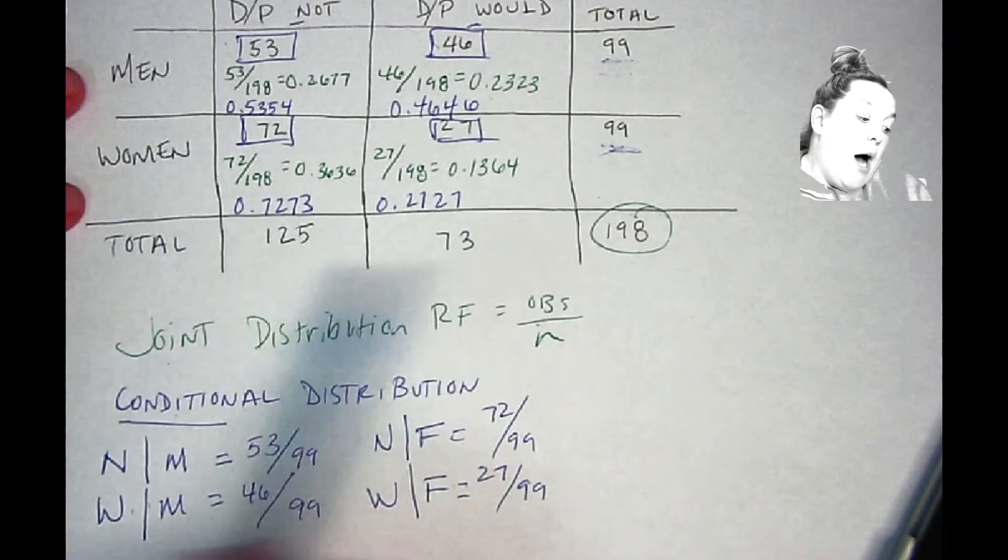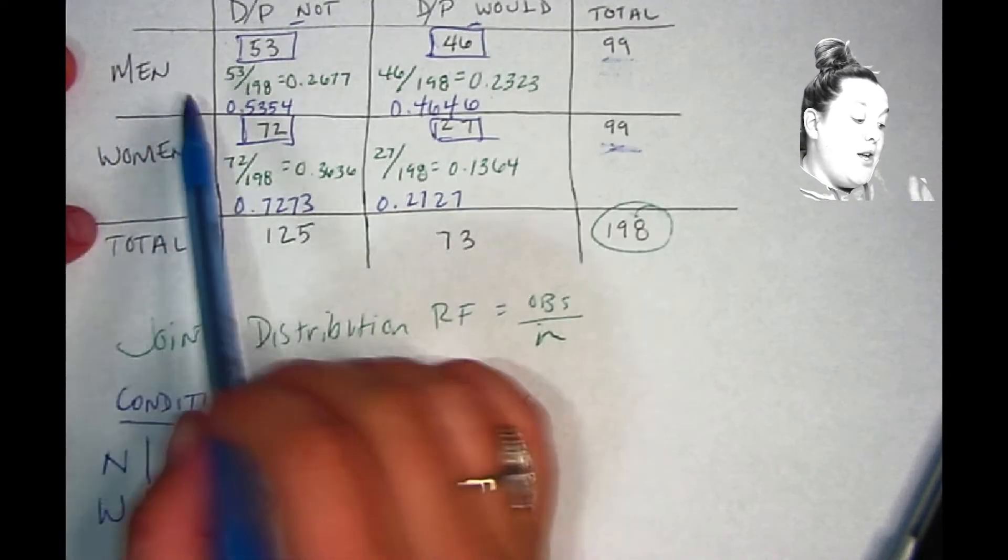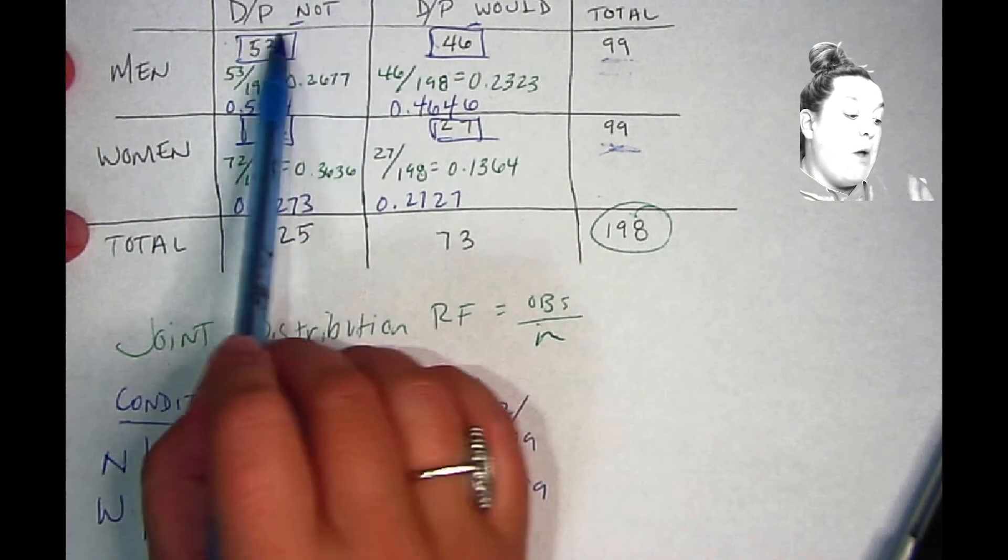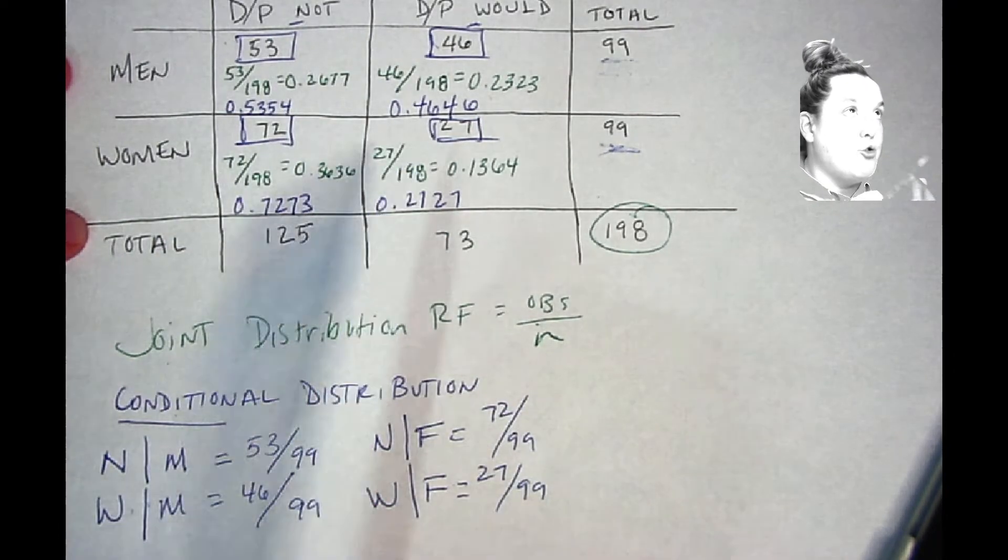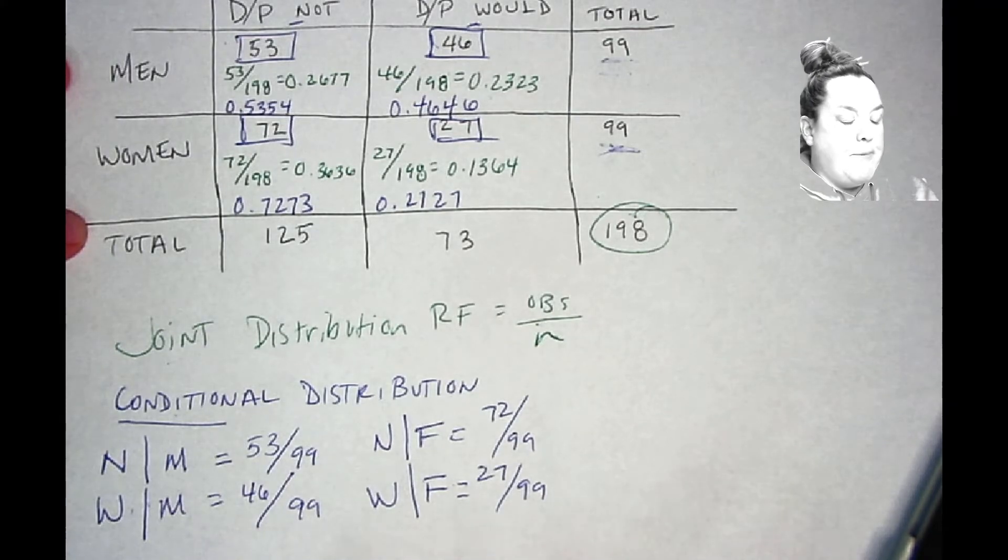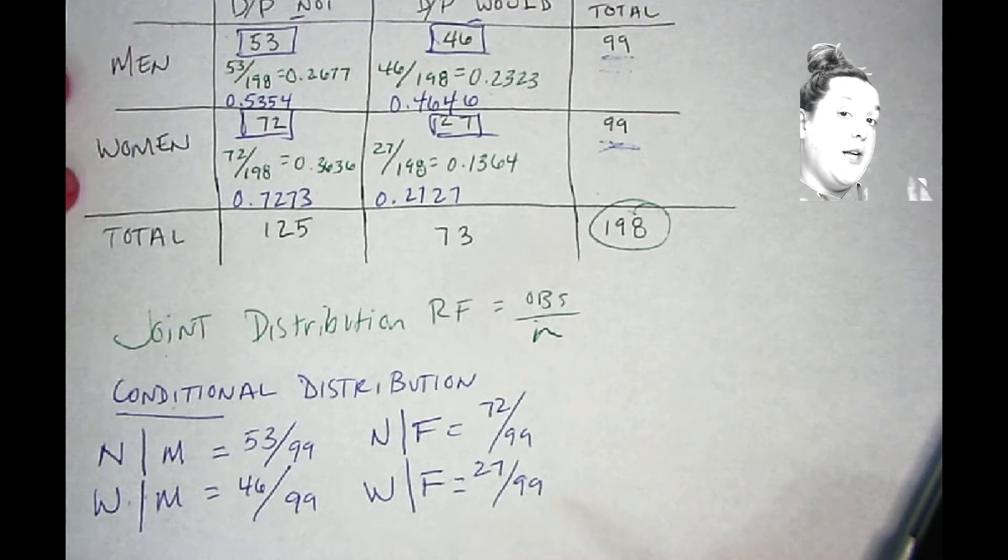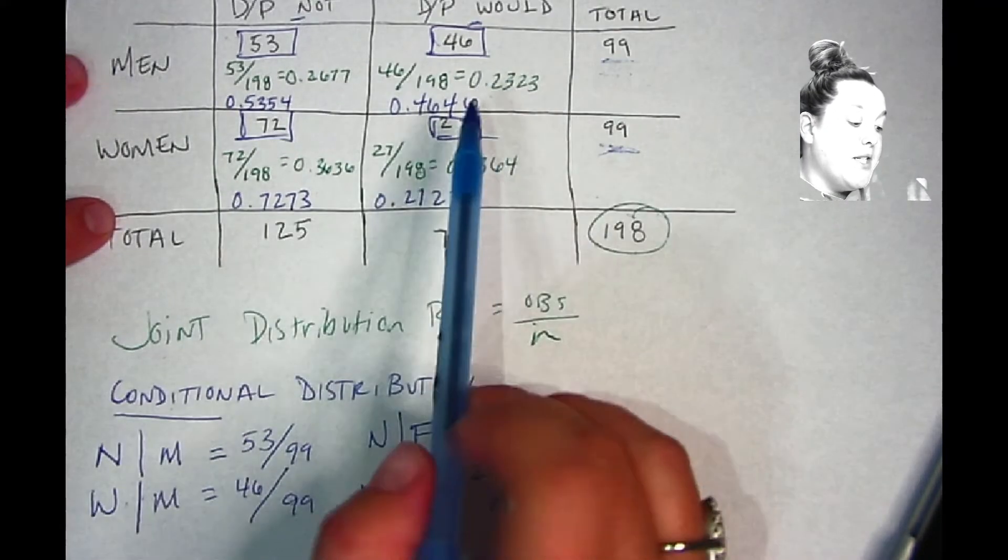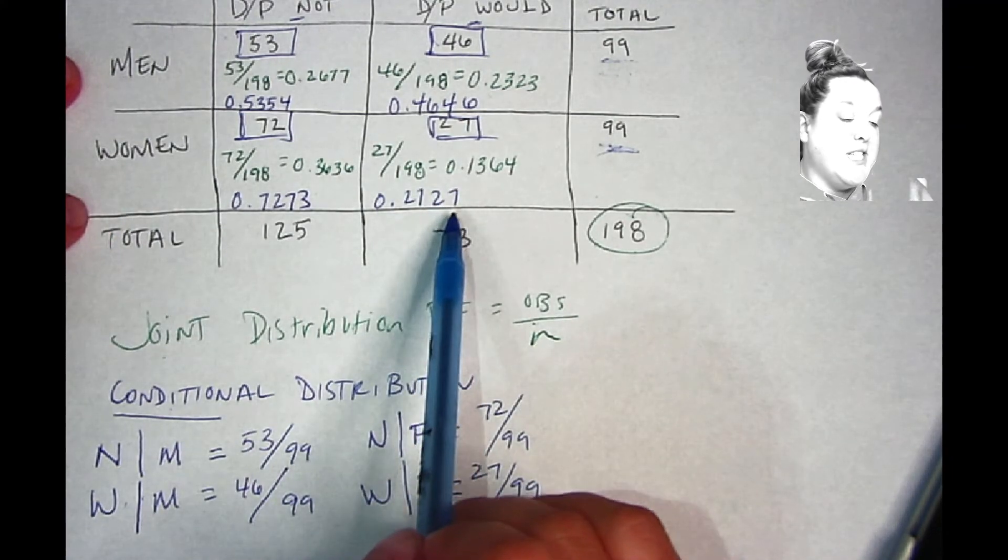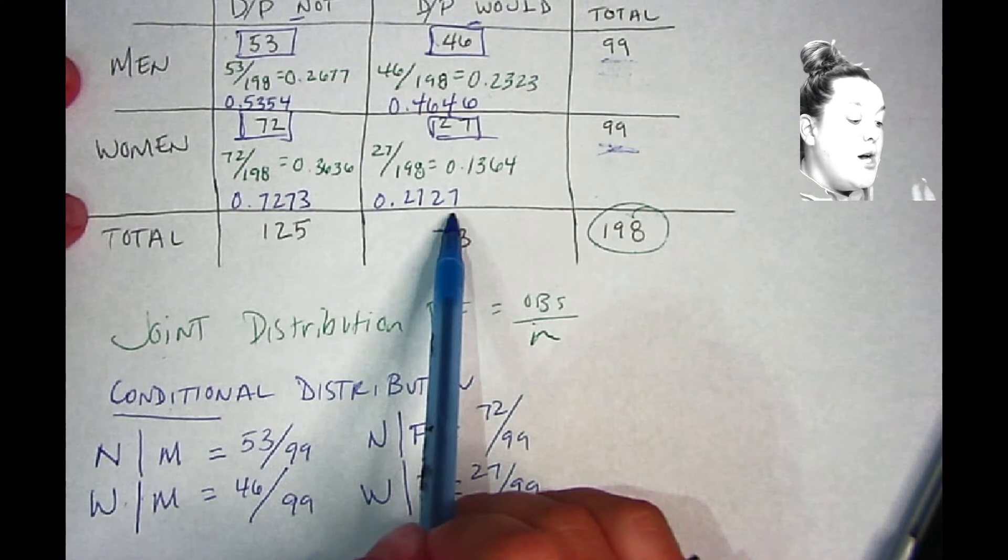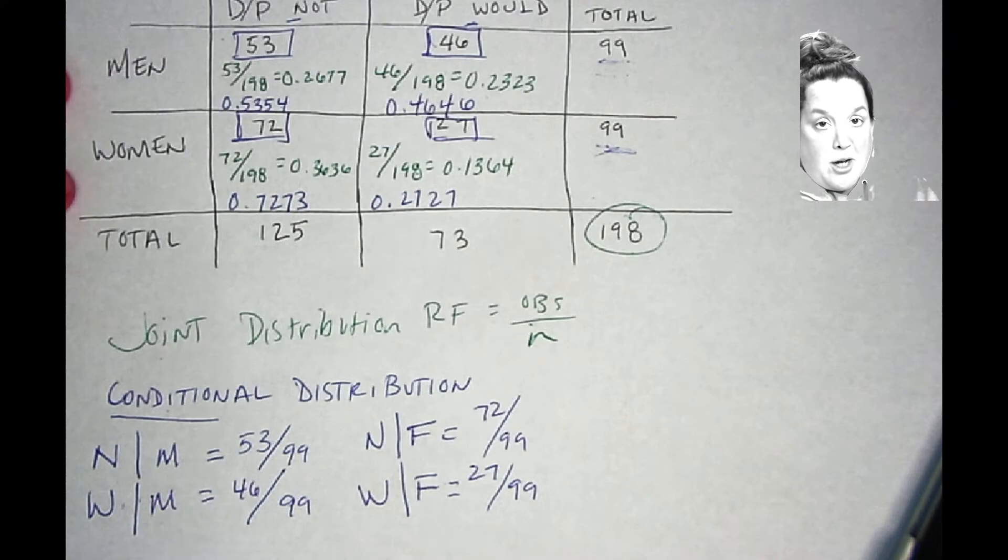So that means if we were to continue on and actually do a test to see if there is a relationship between sex and whether or not someone would ride in a driverless passenger vehicle, I would expect to see a relationship. Because I would expect that these two being as different as they are, we would see something statistically significant in that.